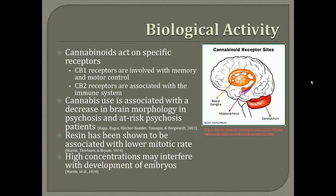Cannabinoids act on specific receptor sites that are known collectively as the endocannabinoid system. Two of these receptors have been cloned. The CB1 receptors occur in neuronal cells and are involved with memory and motor control, while the CB2 receptors are found in non-neuronal cells and are associated with the immune system.